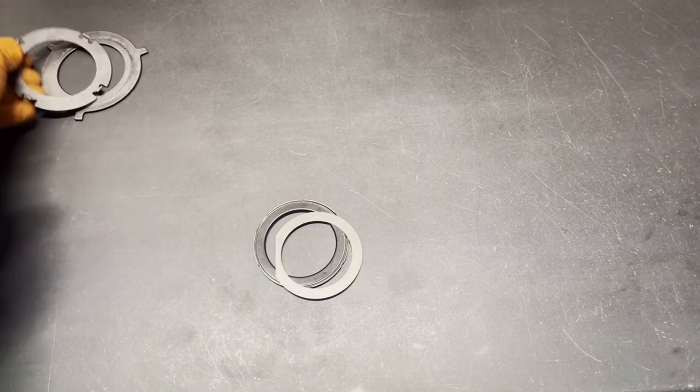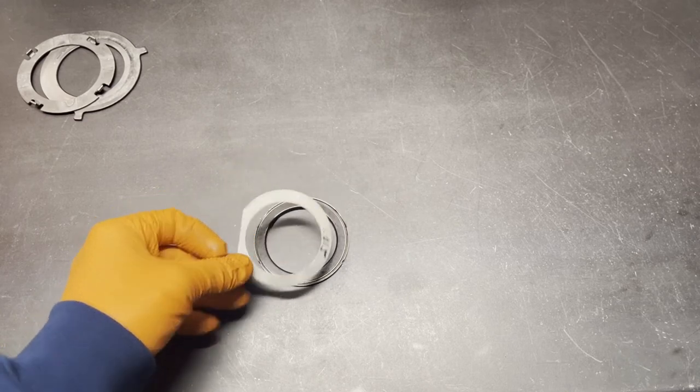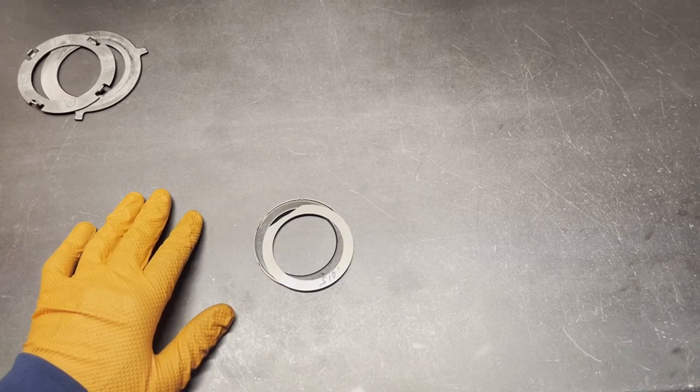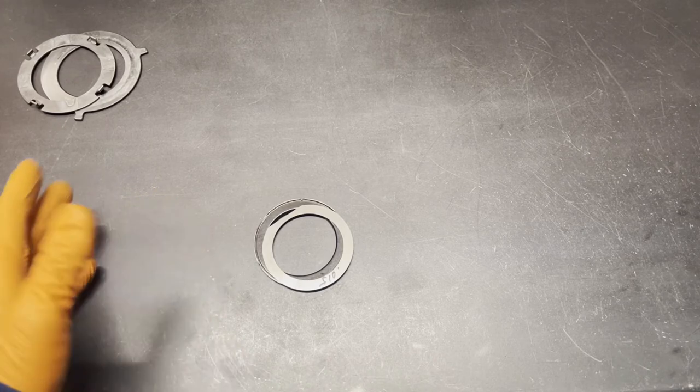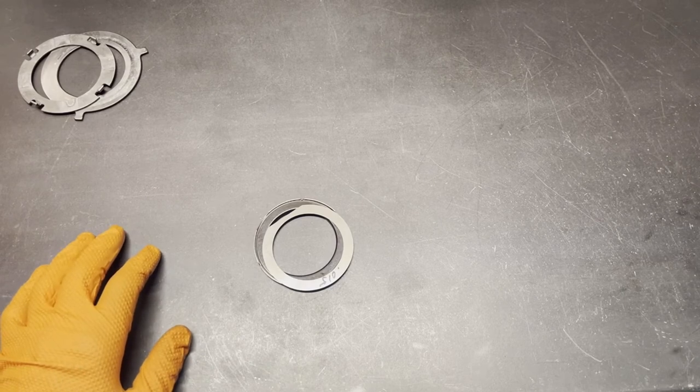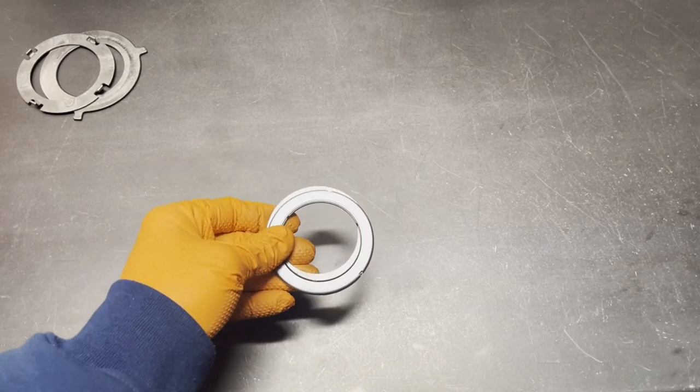We can add or delete shims as we need to when we go to measure final end play. I like to keep rear gear end play on a TH400 and a 4L80E to anywhere between 6 and 12, 6 and 13 thousandths. That's what I like to shoot for. This gives us a good place to start.